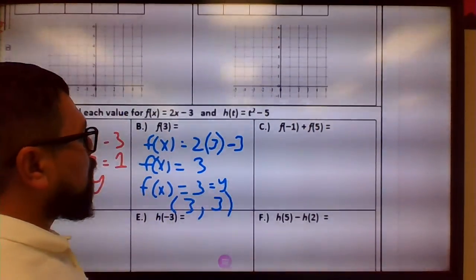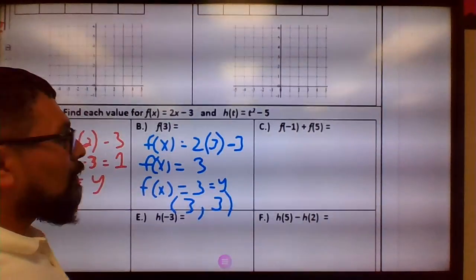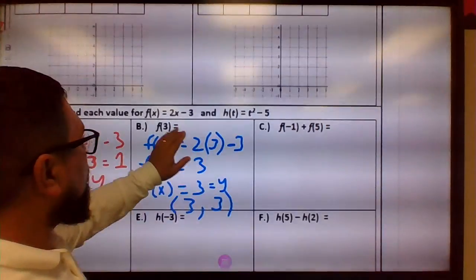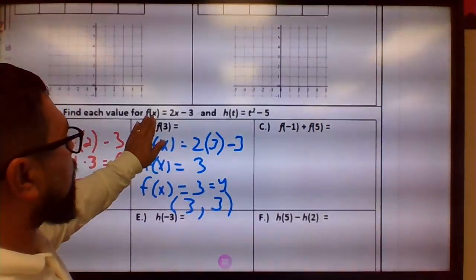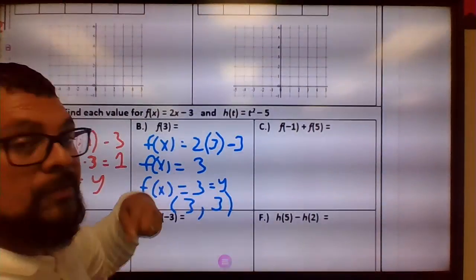F of negative 1, so we're going to take this function right here, and wherever I see an x, we're going to put in negative 1. In this case, we don't need to keep the function here, the F of x, like we did here, because we're actually adding these two, so let's just substitute.